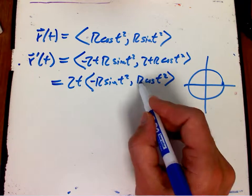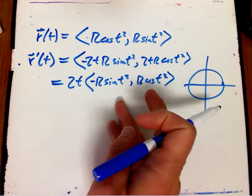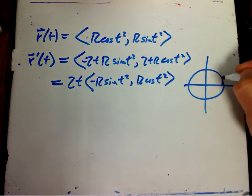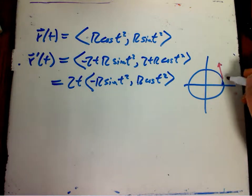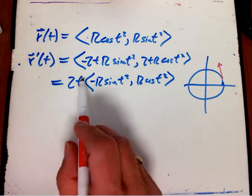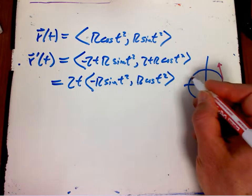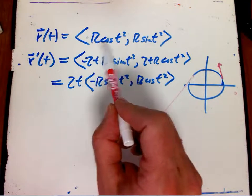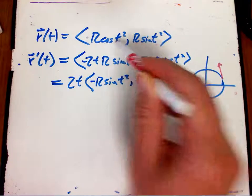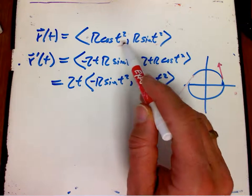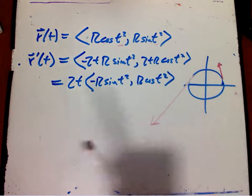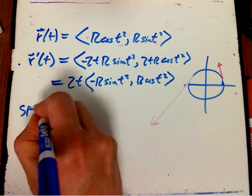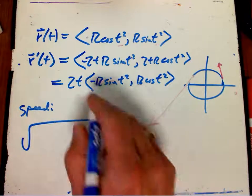But it still has a very similar result, that up to a scaling, we switch these two components and put a minus on. That turns out to still be a vector that's going perpendicular, but notice that as t increases, we're going to get something that's much, much faster. So let's think about that for a minute. As, if I've got r cosine t squared and r sine t squared, the angle that I'm at on the circle moves as the square of the time. And so that is going to go faster and faster and faster.